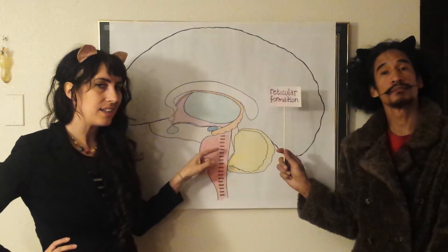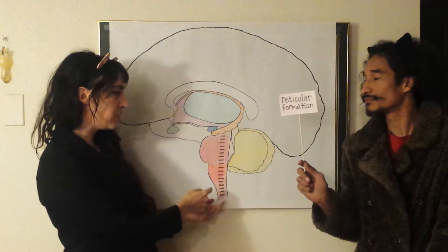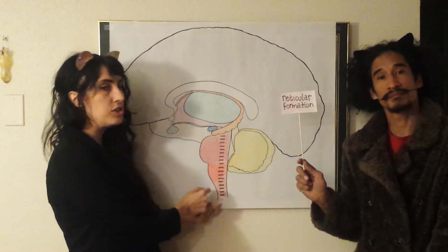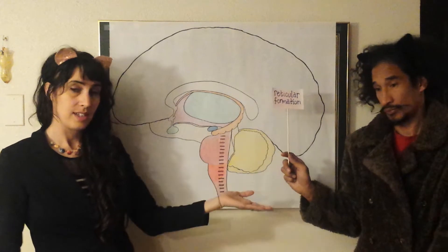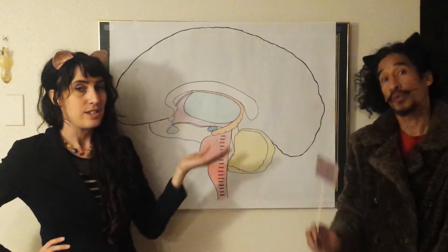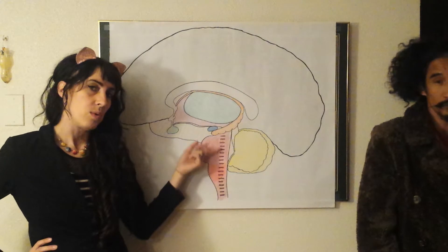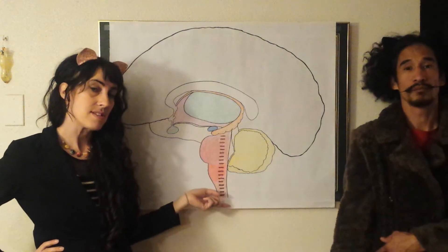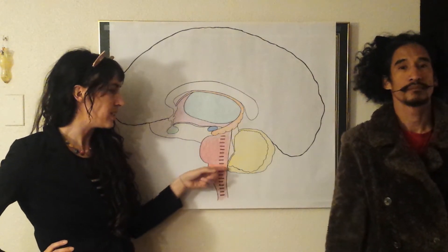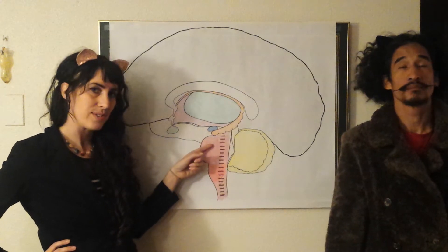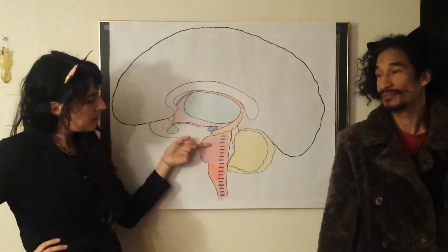Next we have the reticular formation. You may notice it looks a lot like a fence. I like to imagine counting sheep jumping over the fence — this means levels of wake and sleep, levels of arousal. Reticular formation: counting sheep.